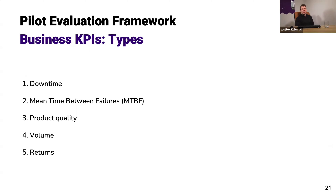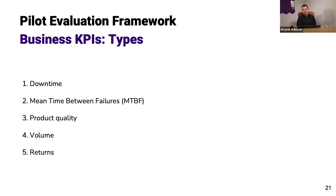In terms of typical business KPIs for predictive maintenance, the big five are: downtime (we want to keep it as low as possible), mean time between failures (a very typical metric used to evaluate maintenance schedules), product quality for machines that produce things in manufacturing, volume — whether product volume or energy volume for energy production — and returns. Returns are the ultimate test of product quality: if there are customer returns from a specific location, product quality is lower than acceptable.